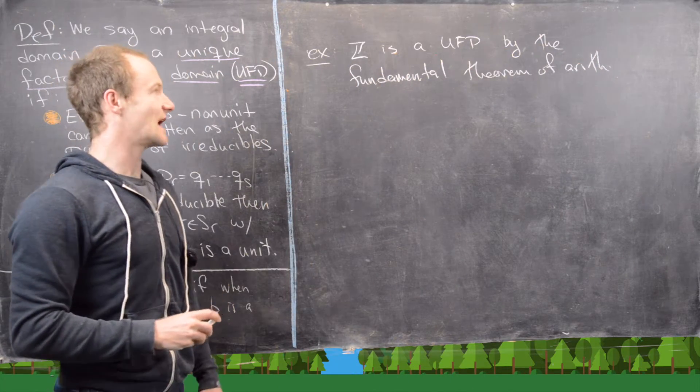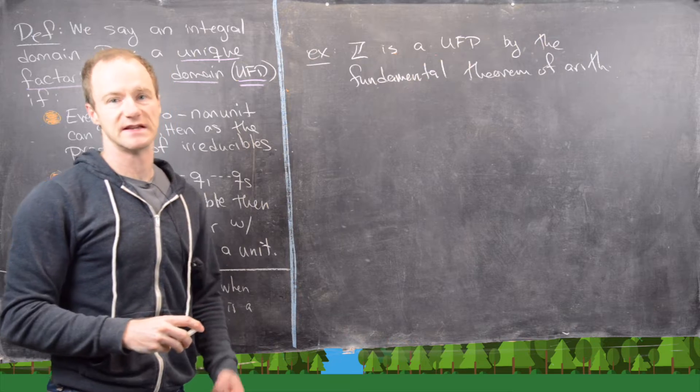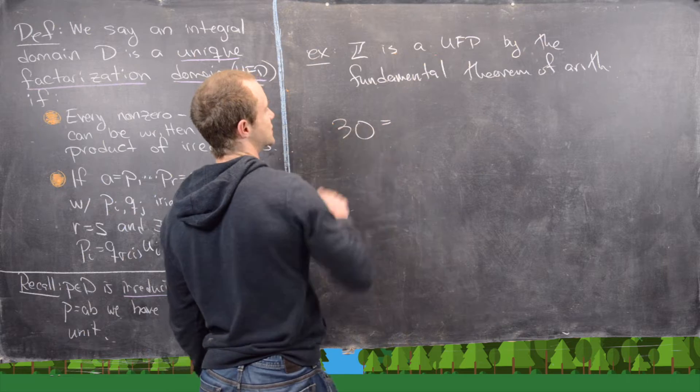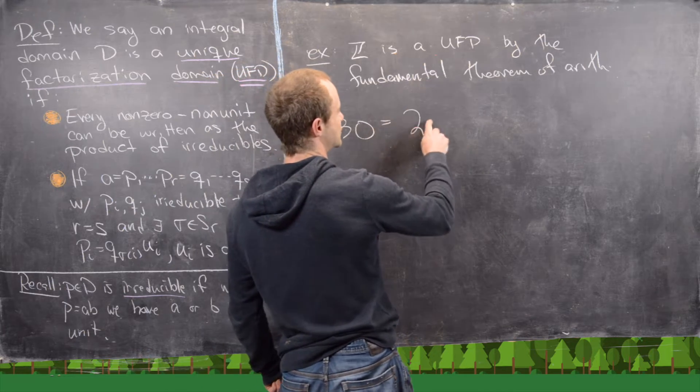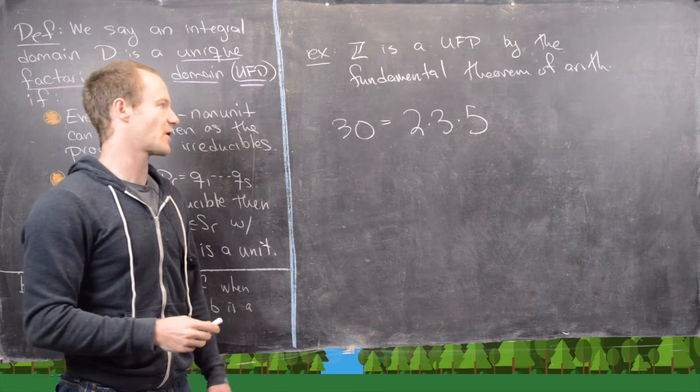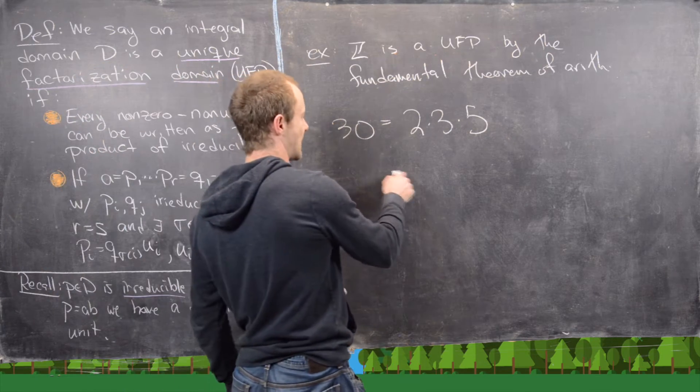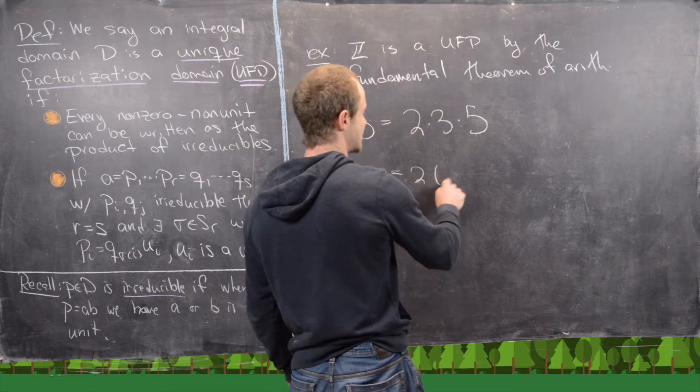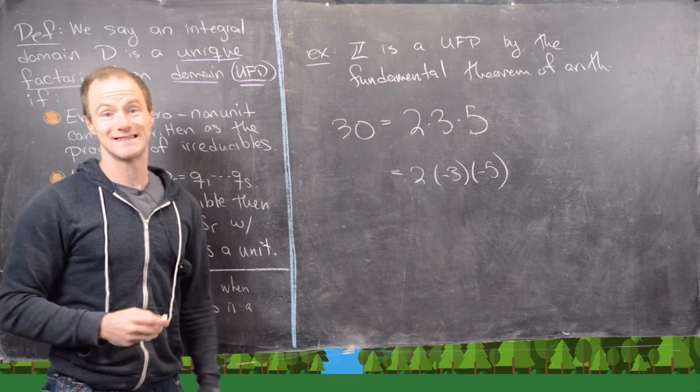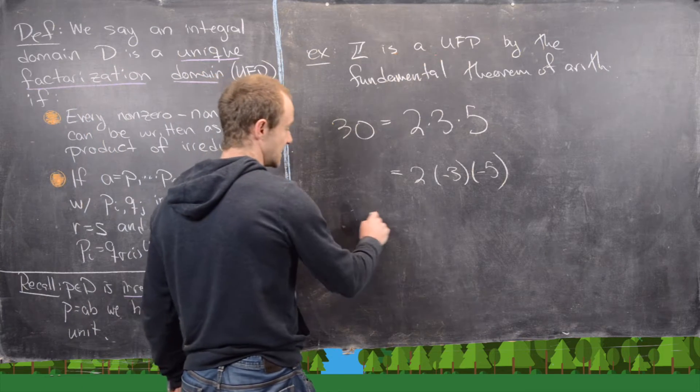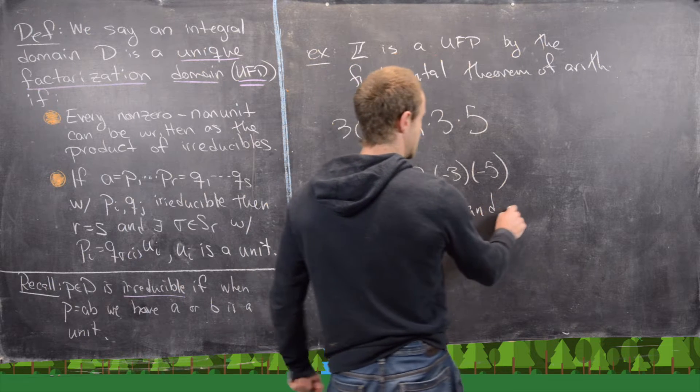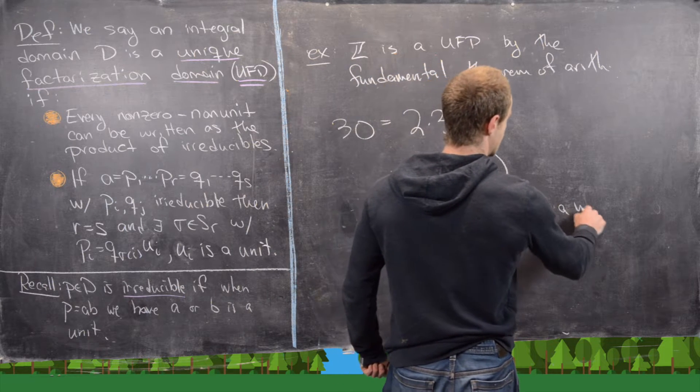Now let's go ahead and try to factor something two different ways in the integers and see what happens. So let's go ahead and maybe do 30. So notice we can factor 30 as 2 times 3 times 5, and those are all primes. They're all natural number primes, but we could also factor these as 2 times negative 3 times negative 5.